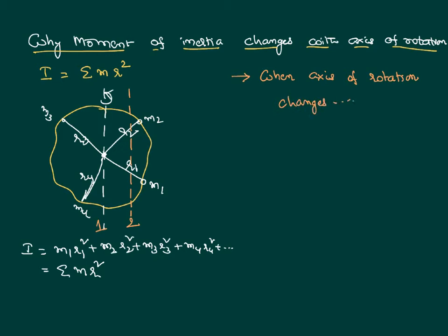Have you identified that whenever axis of rotation changes, distance of each particle from the axis of rotation is also different? As the distance is different, moment of inertia is different.